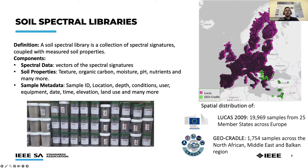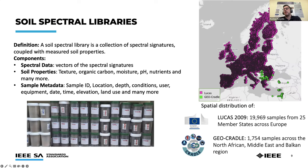The main goal of soil spectroscopy is to capture accurate, compatible, and repeatable spectral signatures of soils. As these instruments are very sensitive, minor changes to the operation protocol or environmental factors will affect the captured spectral signature. A collection of spectral signatures accompanied with chemical analysis of the soil sample are called spectral libraries. Concretely, they consist of three things: spectral data vectors, soil properties from chemical lab analysis — most frequently texture, organic carbon, moisture, pH, and nutrients — and soil sample metadata including unique sample ID, location, depth, conditions, equipment used, date, time, elevation, and land use.